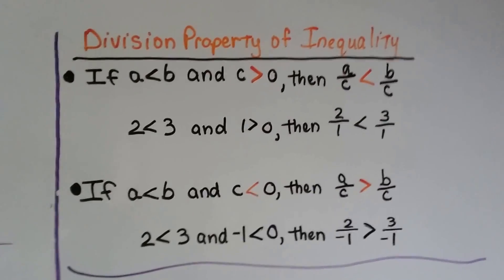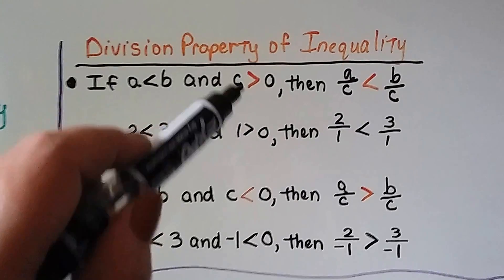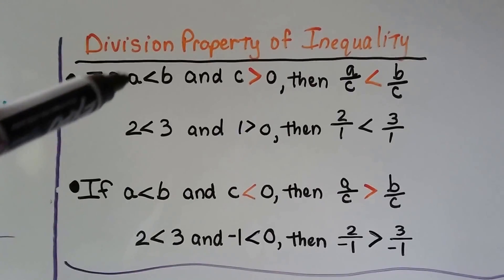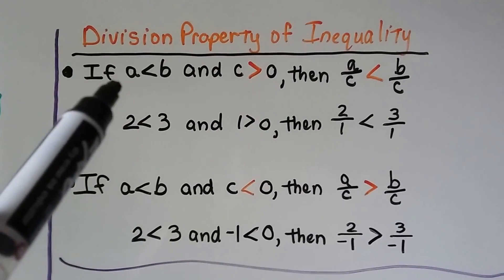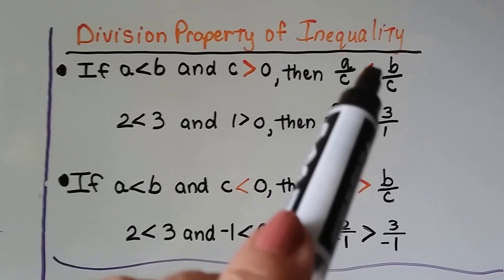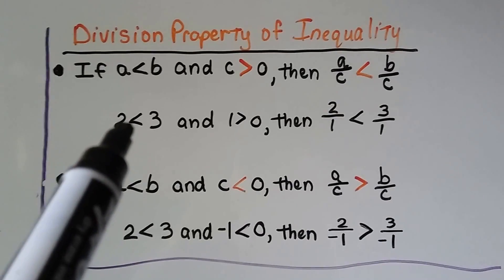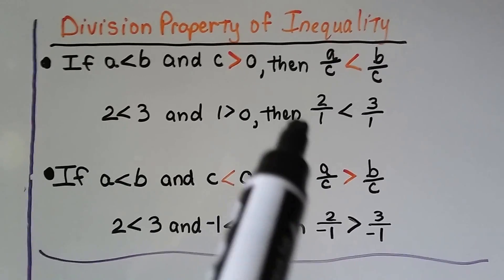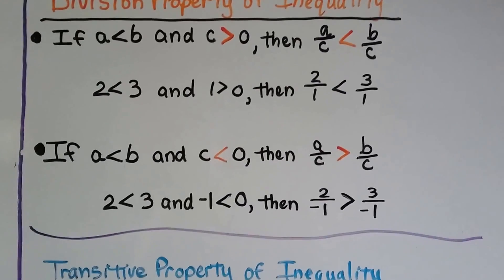The division property of inequality also has signs reversing for one case. With a = 2, b = 3, and c = 1: if a is less than b and c is greater than 0, then a ÷ c is less than b ÷ c. So if 2 is less than 3 and 1 is greater than 0, then 2 ÷ 1 is less than 3 ÷ 1 — yes, 2 is less than 3.